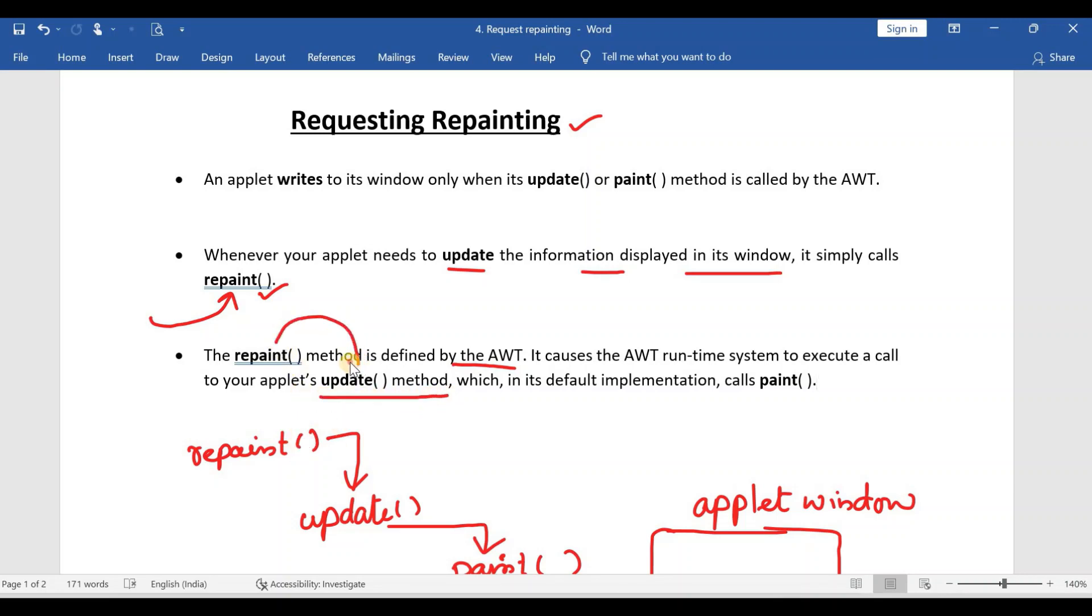As I told you, repaint will call the update method, which in its default implementation calls the paint method. That means update will call the paint method.